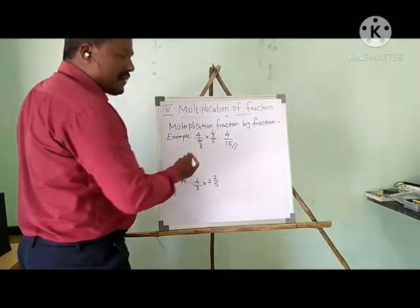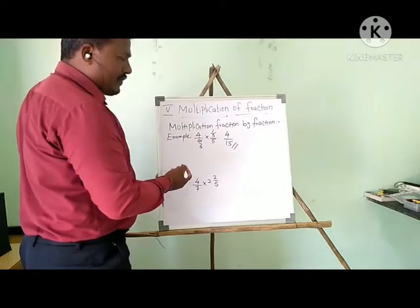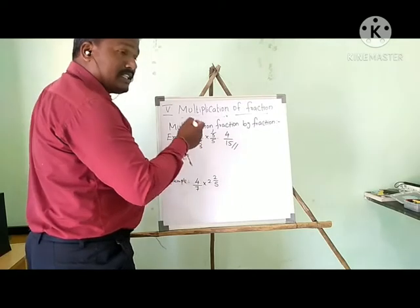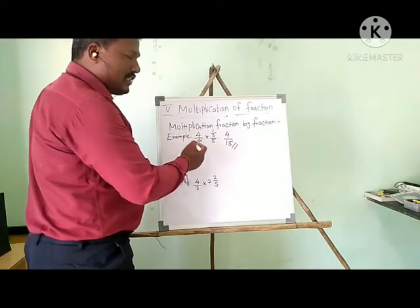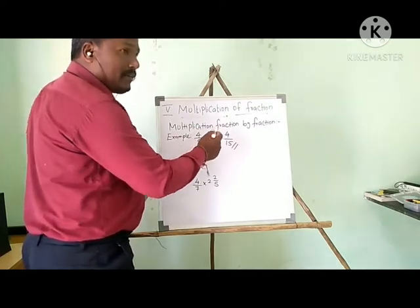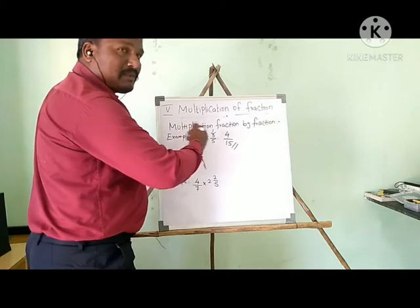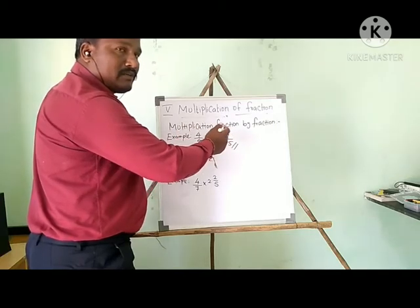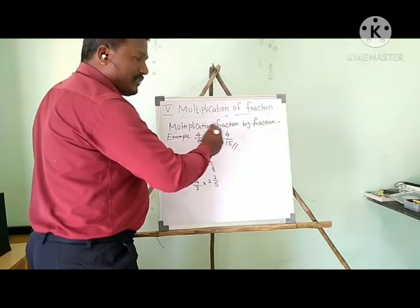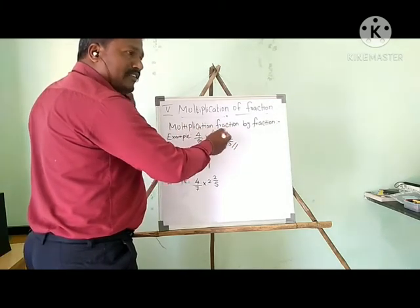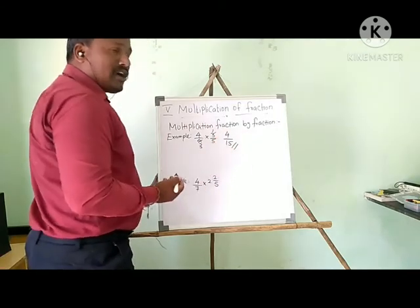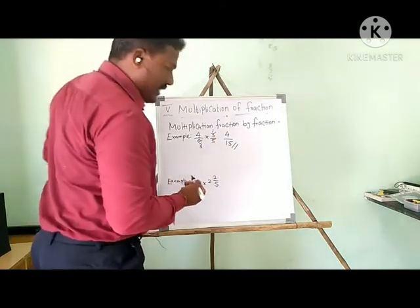This is an unlike fraction. If you have this kind of fraction, just simplify first, then multiply the remaining numbers — multiply both numerator and denominator — and finally you get the product.